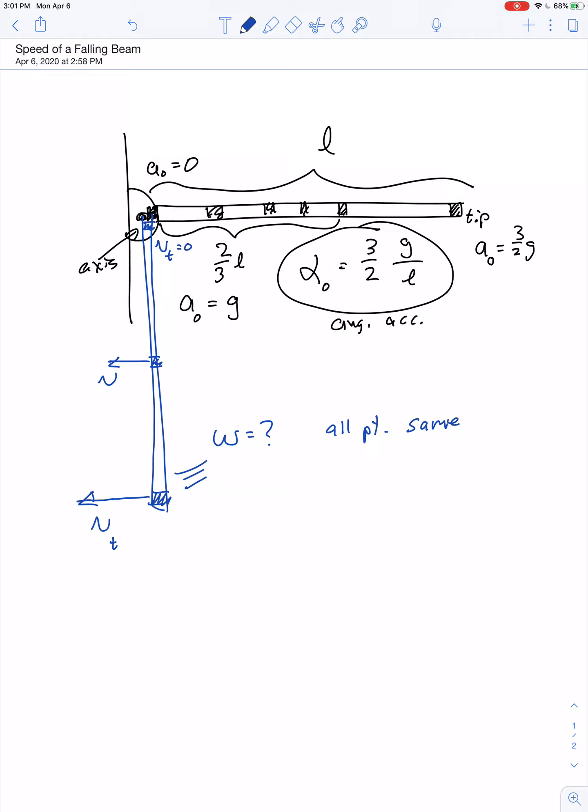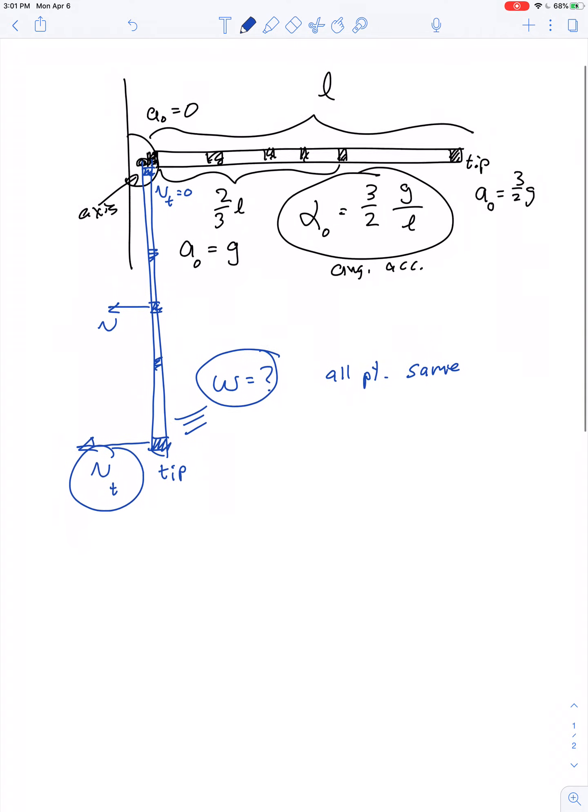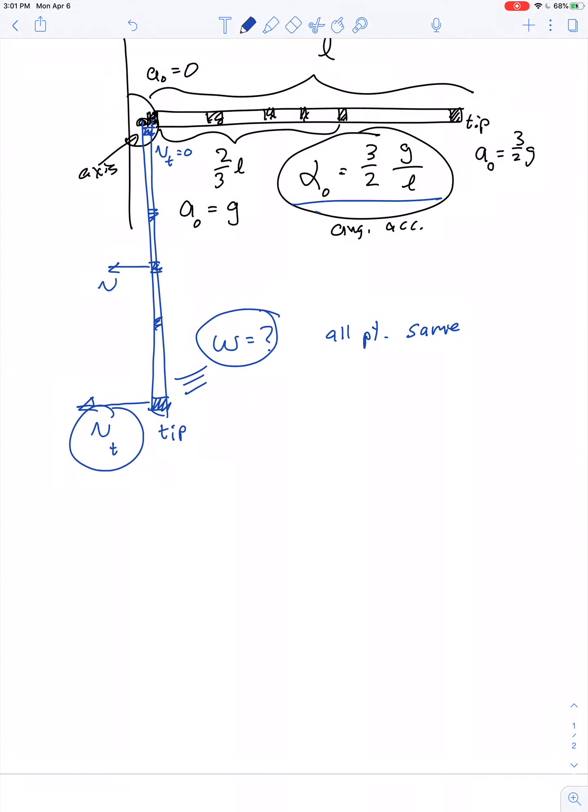So let's do two things. Let's figure out the common value of omega that all points of the beam have once it goes vertical, and let's figure out what the tangential velocity is for the tip of the beam. So you might think, well, this is easy.